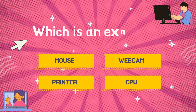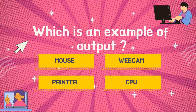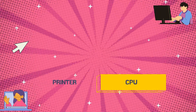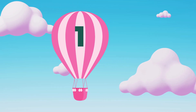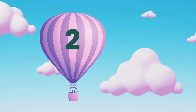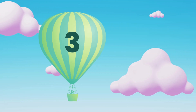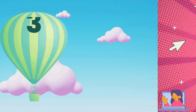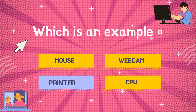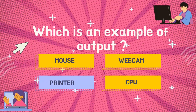Which is an example of output? Your time starts now. That's right! It's the printer. A printer gives output.